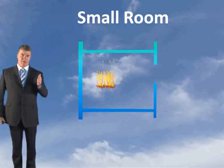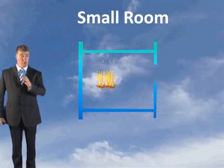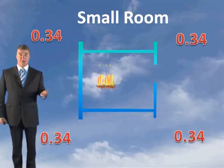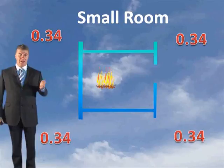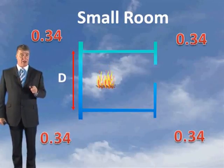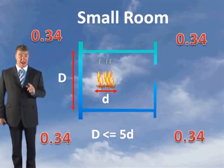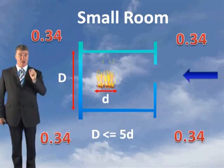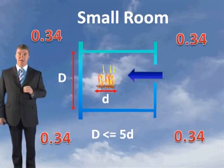There are three coefficient options: 0.19, 0.21, or 0.34. If it's classified as a small room, you use 0.34. A room is considered small when the maximum room dimension is less than or equal to 5 times the diameter of the design fire size, and air can only come in from one direction. In this case, we're not using 0.34 because air can come in from more than one entrance.